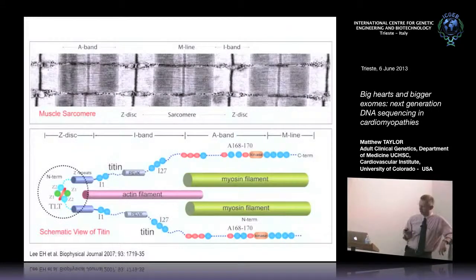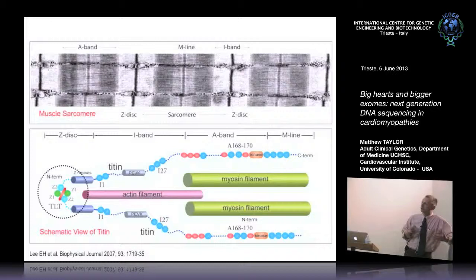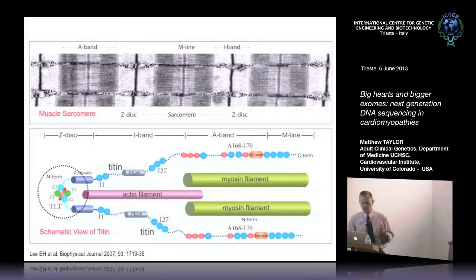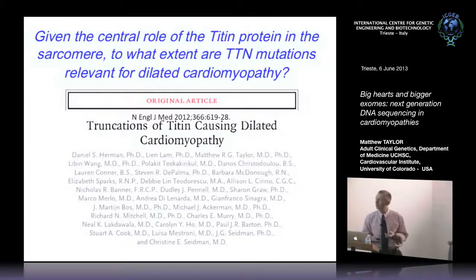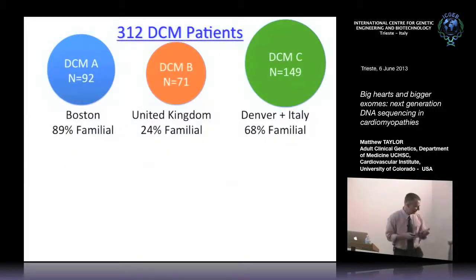Here's another picture showing just half of Titin going to the middle of the sarcomere, with several different domains really stretching from one side to the other. Because it was such a big protein, it was difficult to study until we were able to do high-throughput sequencing. In this paper published last year, we looked at patients with the enlarged dilated heart across three different populations.